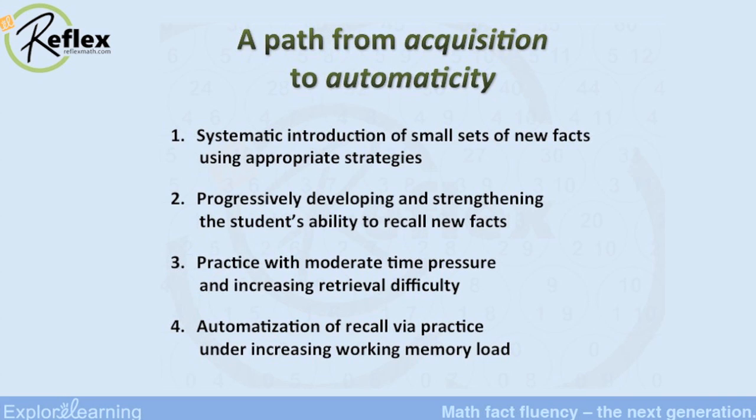Small sets of new facts — maybe that's been a place where sometimes we've made errors in the past. There are times when you can teach a broader set of facts, like a rule — multiplied by zero or something like that — that gets you a whole bunch of facts in one shot. But we make a lot of use of fact families, and that's only four facts. Something like 3, 4, 12 — sort of like chunking. You have three numbers but you get four facts: three times four, four times three, twelve divided by four, and twelve divided by three.